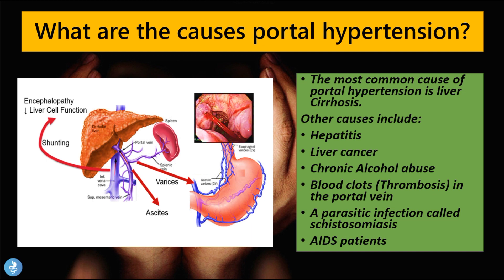Other causes of portal hypertension include hepatitis, which is inflammation of the liver; liver cancer, where a large tumor obstructs blood flow; and chronic alcohol abuse. We can also have a blood clot within the portal venous system causing backflow and pooling. Additionally, a parasitic infection within the liver can occlude vessels and cause backflow of blood, and patients suffering from HIV and AIDS may also develop portal hypertension.